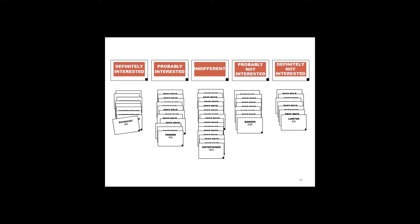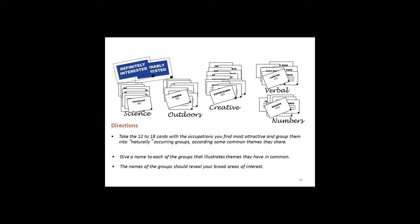After the client has sorted them into those five categories, as you can see on the PowerPoint, I then ask them to take the 10 to 15 to 20 occupations that are most interesting to them and sort those into naturally occurring groups according to how attractive those occupations are. I ask them to give a name for each group that illustrates the theme they have in common, and then put the names of the occupations under each of those themes. I never show the client the PowerPoint categories because I don't want them to see my categories — I'd rather have them come up with their own.